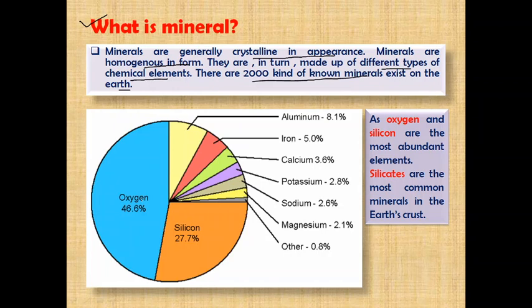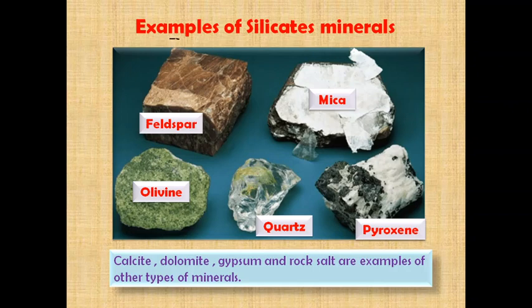Out of all these chemical elements, Oxygen and Silicon are the most abundant in the earth crust. Therefore, in the earth crust, silicates are the most common mineral. Why? Because silicates are formed due to the combination of Oxygen and Silicon, which are the most abundant elements in our earth crust. Examples of some silicate minerals are: Feldspar, Mica, Olivine, Quartz, and Pyroxene.